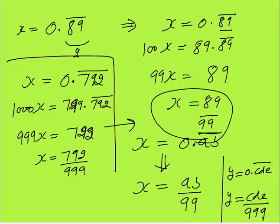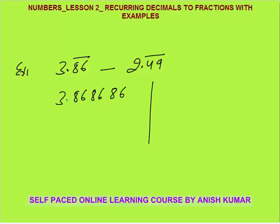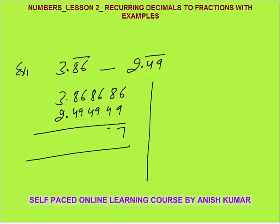As shown with examples, this is how you convert recurring decimals to fractions. Now let's solve some questions. Example 1: 3.86 bar minus 2.49 bar. One way: write out 3.8686... minus 2.4949..., then subtract digit by digit: 6 minus 9, borrow and so on. The repeating block 37 emerges, giving 1.37 bar.